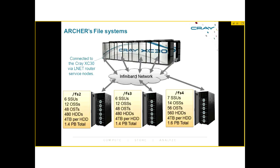Archer has three file systems: FS2, FS3, and FS4. The file system is presented as a single namespace - it looks like a single file system, and the fact that it's across multiple disks is completely hidden from you. It's mapped to /work/whatever-your-project-is. Typically each file system has about one and a half petabytes of storage and of order 50 of these OSTs - 50 of what I think of as your IO servers.